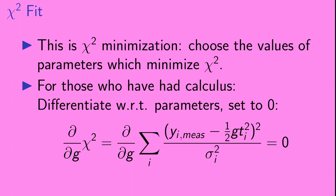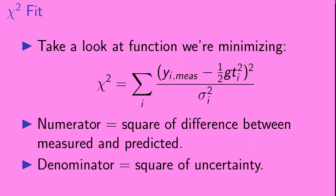So this is chi-squared minimization. Basically, we choose the values of the parameters which minimize chi-squared. And for those viewers who have had calculus, what you do is the following: You differentiate with respect to the parameters, and then you set those derivatives to zero, and then you solve the resulting equations.